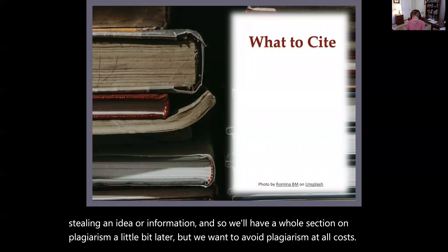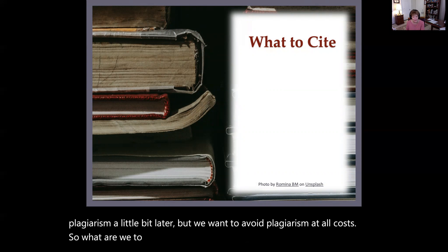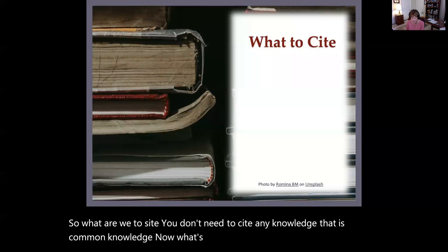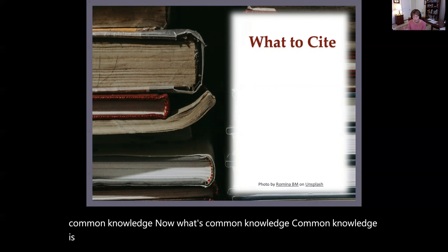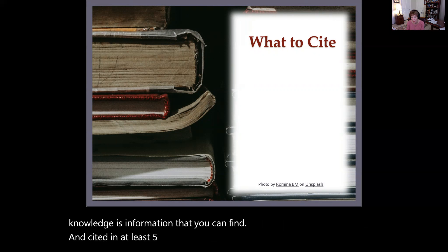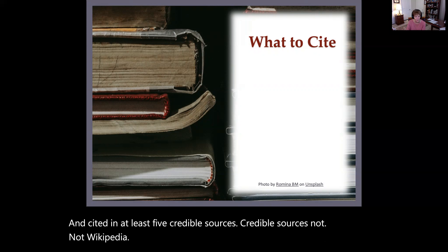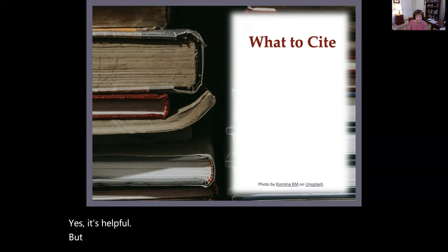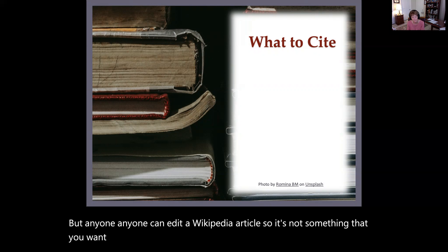So what do we need to cite? You don't need to cite knowledge that is common knowledge. Common knowledge is information that you can find uncited in at least five credible sources — credible sources, not Wikipedia. Yes, Wikipedia is helpful, but anyone can edit a Wikipedia article, so it's not something you want to depend upon.